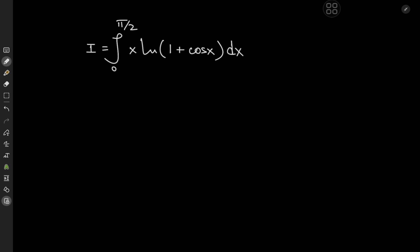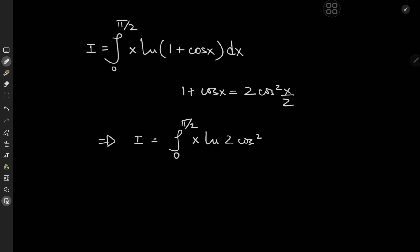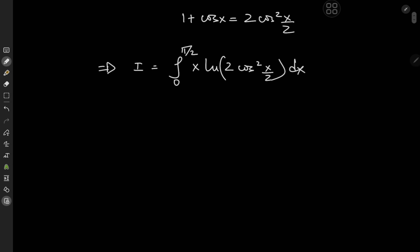Without further delay, let's get started with the 1 plus cosine of x term — it's the argument of the natural logarithm. I'll invoke the double angle formula for cosine to write 1 + cos x = 2cos²(x/2). This means the target integral I is now the integral from 0 to π/2 of x times log(2cos²(x/2)) dx. Using the properties of the logarithm, we can write this as the integral from 0 to π/2 of x times [log 2 + 2·log(cos(x/2))] dx.